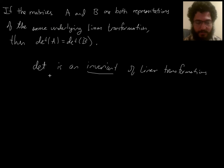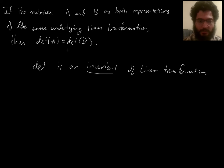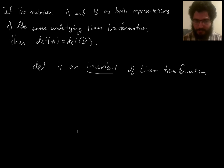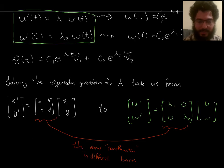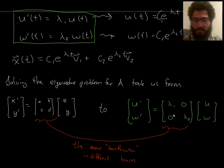The determinant is an invariant of linear transformations: it doesn't change when you change which matrix you use to represent your linear transformation. Really, when you talk about the determinant of a matrix, it's the determinant of the linear transformation underneath. So whatever matrix you started with, once you solve the eigenvalue problem, you get a diagonal matrix such that both are representations of the same linear transformation — you just do a change of variables like x, y to u, w.